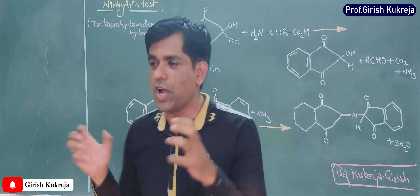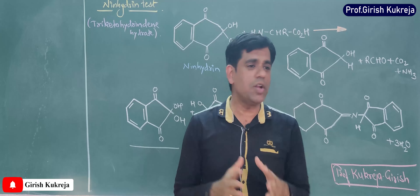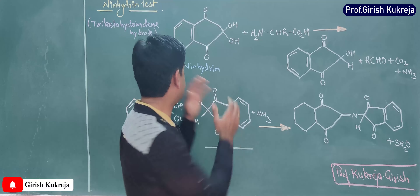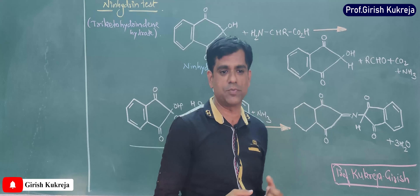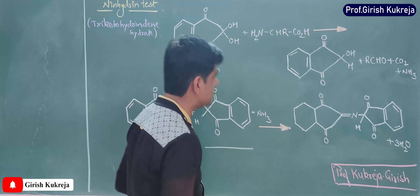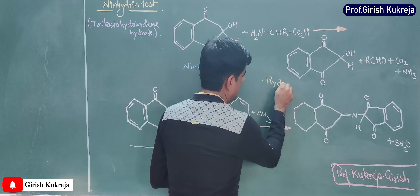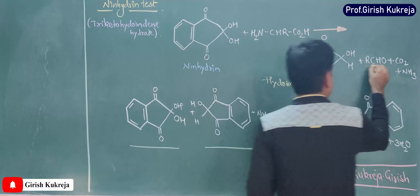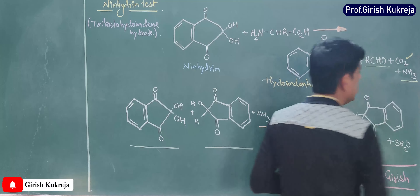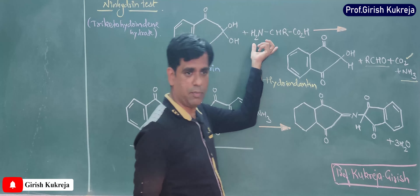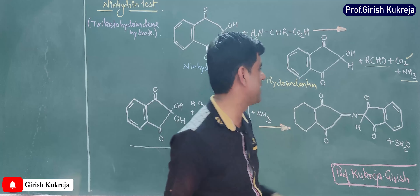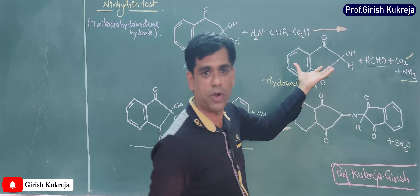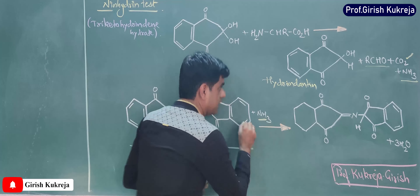In the presence of ninhydrin, the amino acid is oxidatively deaminated. Once the amino acid is oxidatively deaminated, it results in the formation of reduced ninhydrin, which we call hydrindantin. Along with hydrindantin, the corresponding aldehyde is formed from the amino acid, and there is a liberation of carbon dioxide and ammonia. So ninhydrin oxidizes the amino acid, liberating carbon dioxide, ammonia, and the reduced form of ninhydrin — hydrindantin.